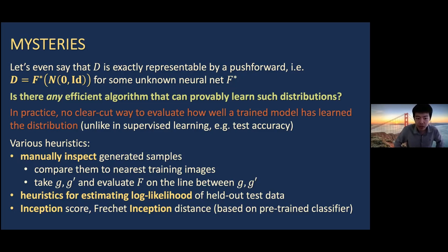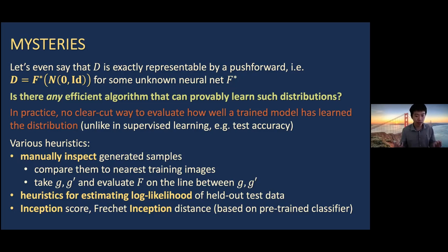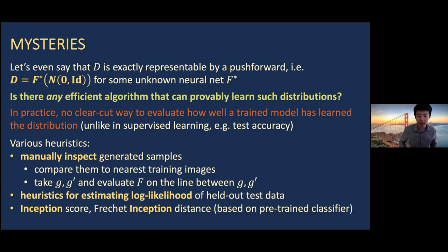Perhaps the most popular metrics are the inception score and the Fréchet inception distance, based on a particular pre-trained image classifier, Inception v3. The Fréchet inception distance takes the Inception v3 network, passes in random generated examples versus random true examples, looks at neural features computed at one of the upper layers, and tries to compare them in some distributional distance. These are purely heuristic — they picked an arbitrary image classifier — and while reasonably correlated with human perception, they don't come with any rigorous guarantees on how well the learning algorithm actually did.